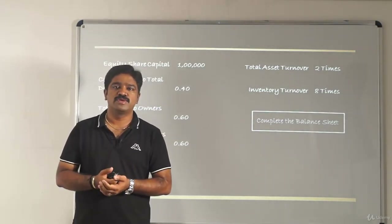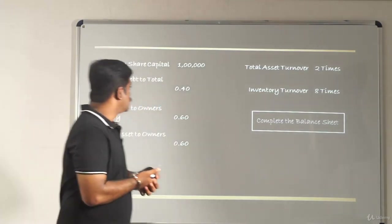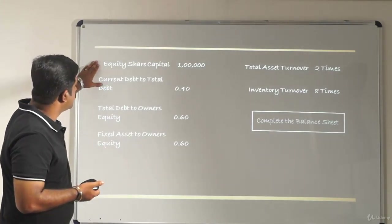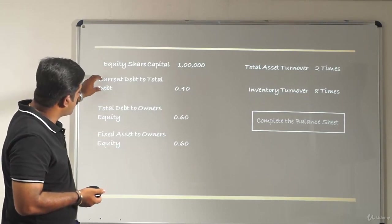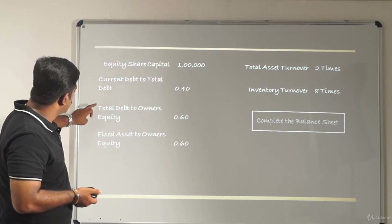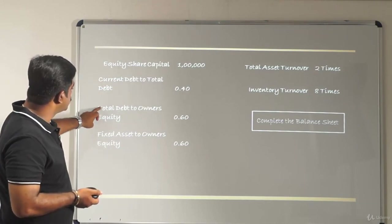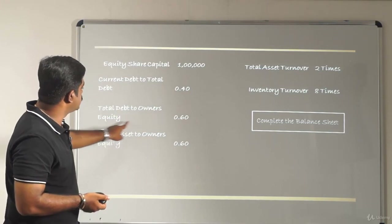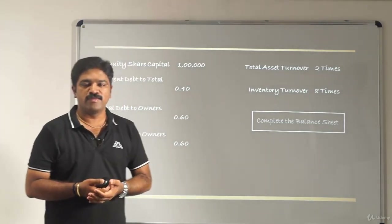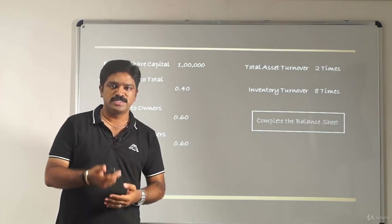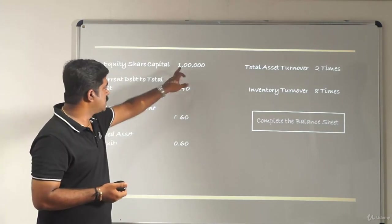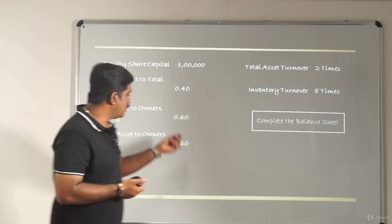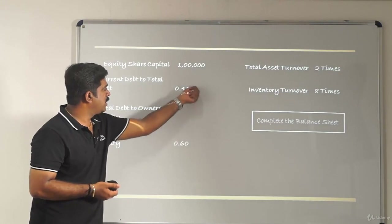We need to create relationships between these items. The first item is equity share capital, and we can relate it to total debt to owner's equity. Since equity share capital is 100,000 and total debt to owner's equity is 0.60, total debt is 60% of owner's equity — that is 60,000. Once we have total debt, we can relate it to current debt to total debt.